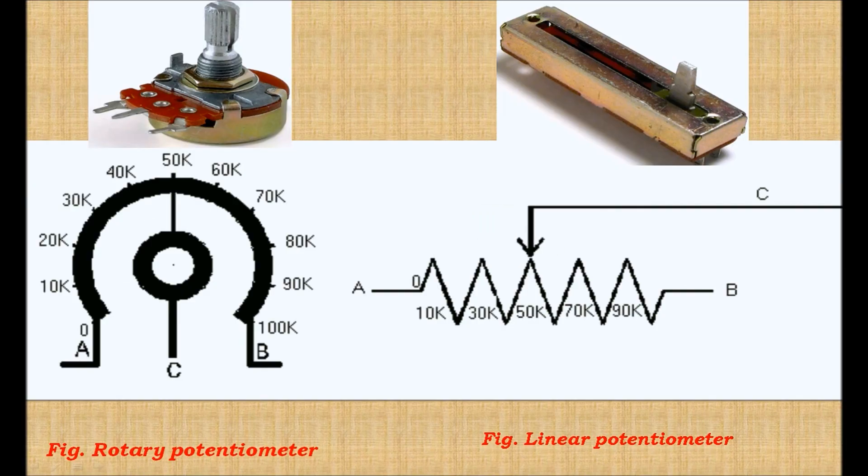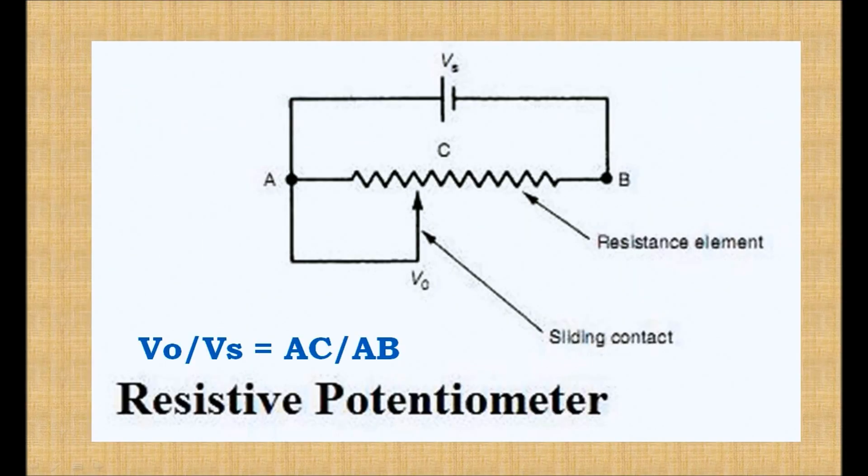The change in voltage or resistance is proportional to the change in displacement of the body. Thus, the voltage change indicates the displacement of the body. The potentiometer can be used for the measurement of translational as well as rotational displacement.